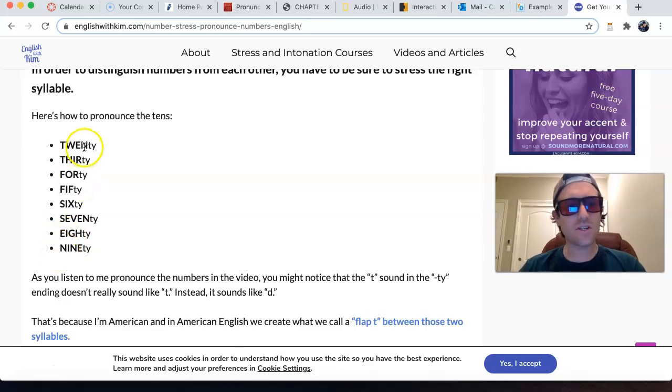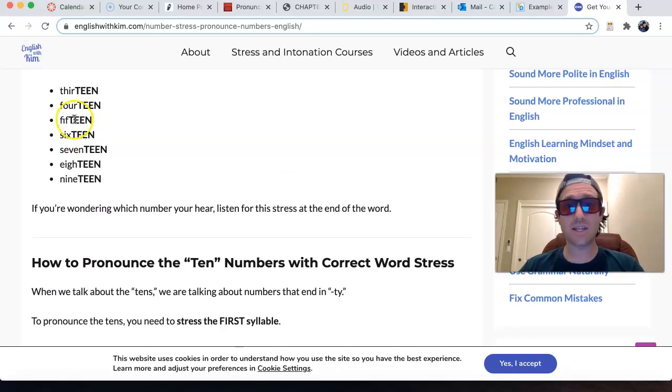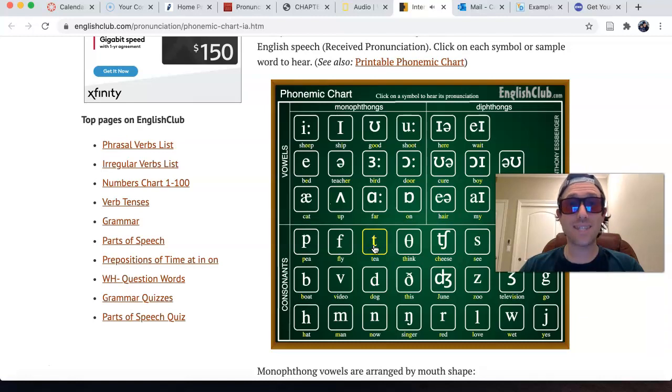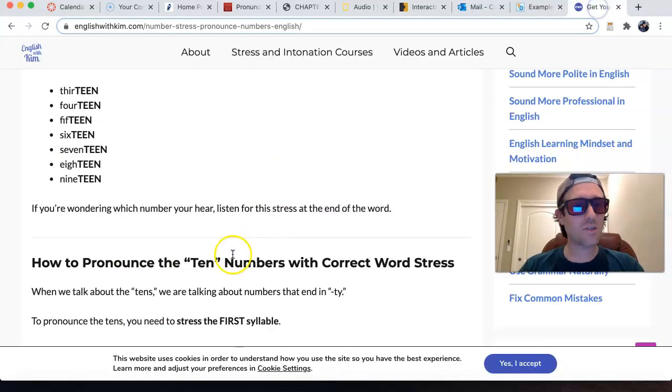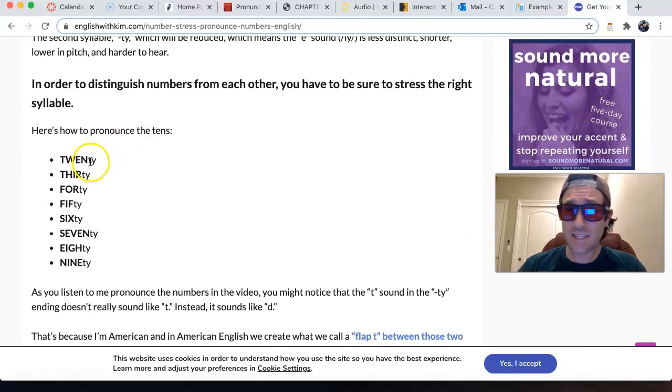Now, notice that the T consonant sound for these, while it's a really clear T consonant sound for the teens, 13, 14, 15, pretty clear the T sound for the teens, but if you look again at the numbers in the tens place,